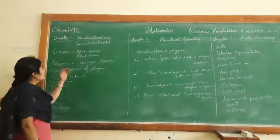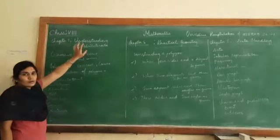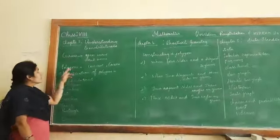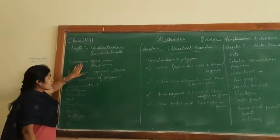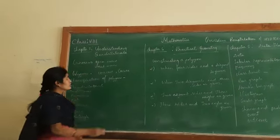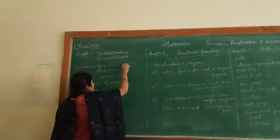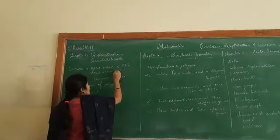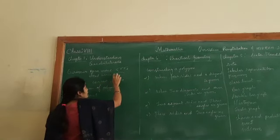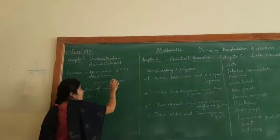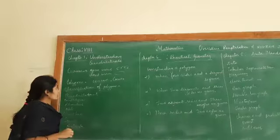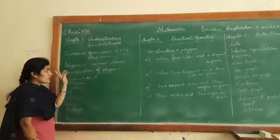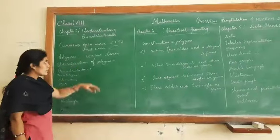Now let us move on to chapter 3: Understanding Quadrilaterals. Here we have learnt about curves - open curve and closed curve. If a curve has two end points it is said to be an open curve. A closed curve is one where there is no end point or initial point. Now, there are two kinds of polygons: concave and convex.